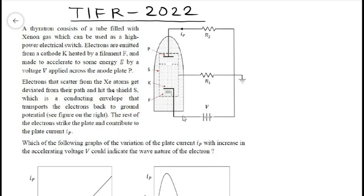Okay, this question was asked in TIFR 2022 physics paper and it says that a thyratron consists of a tube which is filled with xenon gas.